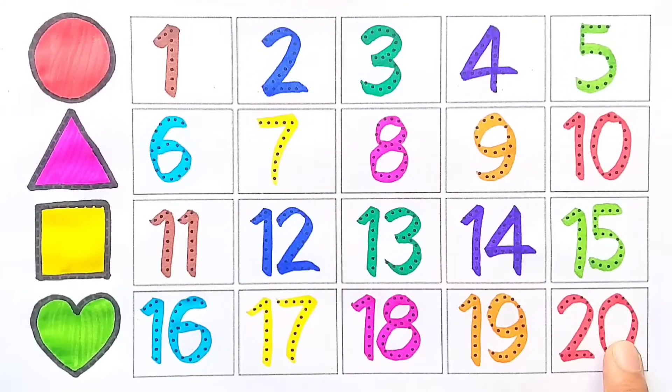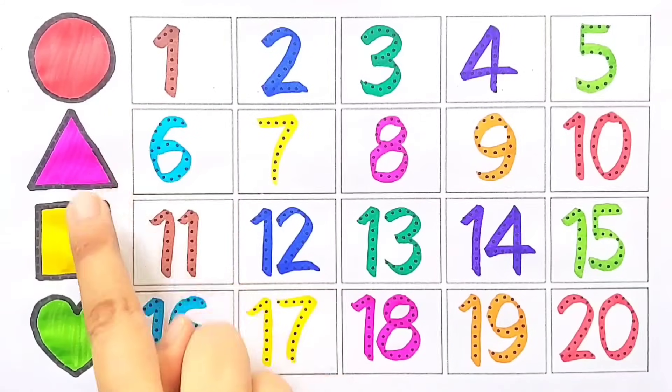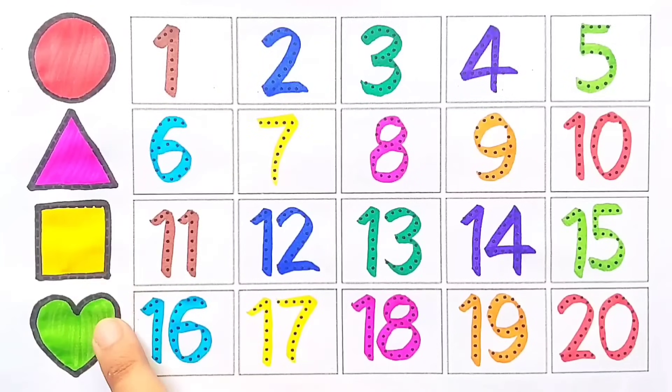19, 20. Circle, triangle, square, heart.